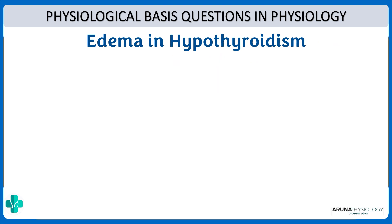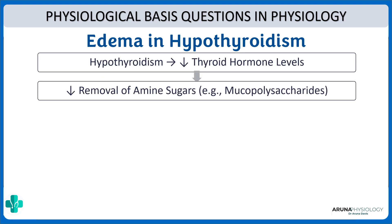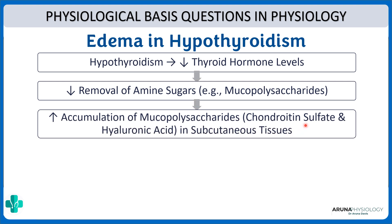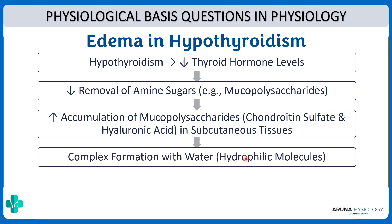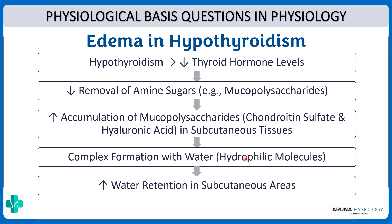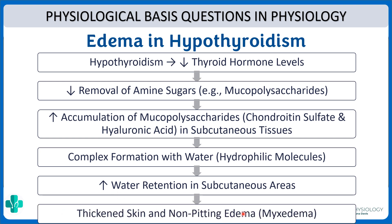Why is there edema in hypothyroidism? Normally it is thyroid hormone which removes mucopolysaccharides. So whenever there is hypothyroidism there would be decreased removal of these mucopolysaccharides. There will be accumulation of mucopolysaccharides like chondroitin sulfate and hyaluronic acid in the subcutaneous tissue, which combine with water to form a complex, causing increased water retention in the subcutaneous area. That is why in hypothyroidism you can have myxedema — thickened skin with non-pitting edema — because of this increased water retention.